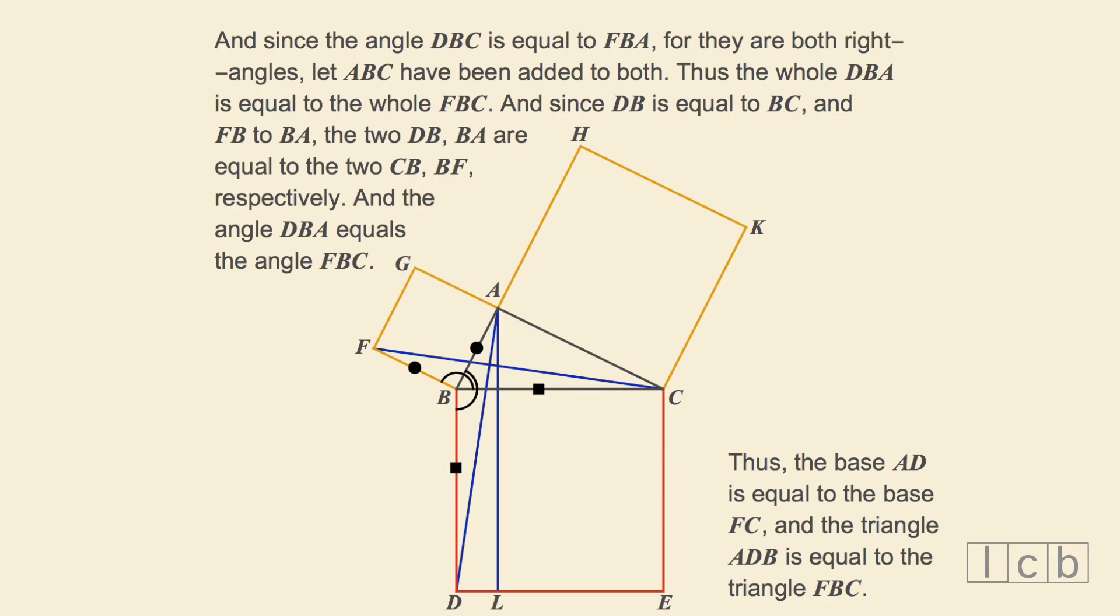Thus, the whole DBA is equal to the whole FBC. And since DB is equal to BC and FB to BA, the two DB, BA are equal to the two CB, BF respectively. And the angle DBA equals the angle FBC.